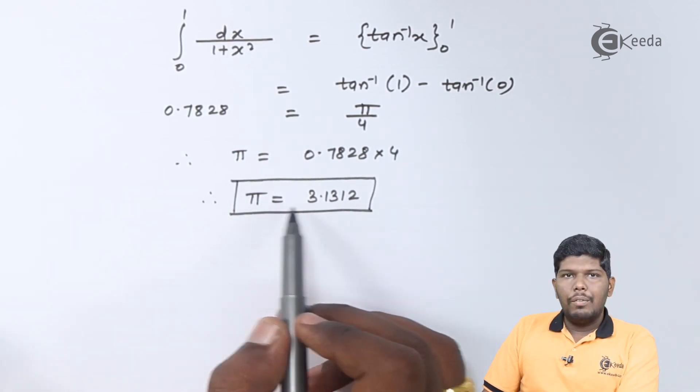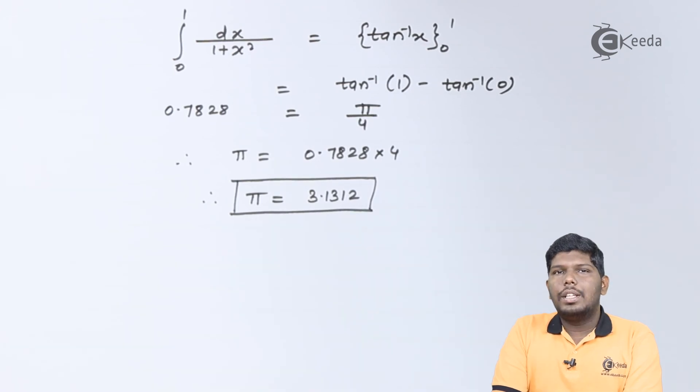So, the value of pi will be 3.1312. I hope friends you have understood this problem. Thank you for watching this video. Stay tuned with eGida and subscribe to eGida.